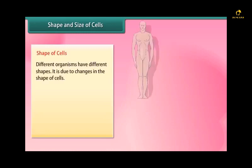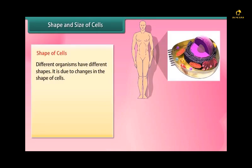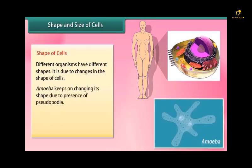Shape and size of cells - Shape of cells: Different organisms have different shapes. It is due to changes in the shape of cells. Amoeba keeps on changing its shape due to presence of pseudopodia.